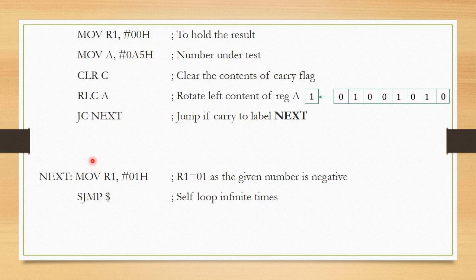What if carry was not set? If carry was set I jump to the label called NEXT. Suppose if carry was not set, then I will be loading the register R1 with an immediate value 00, indicating the number under test is positive.